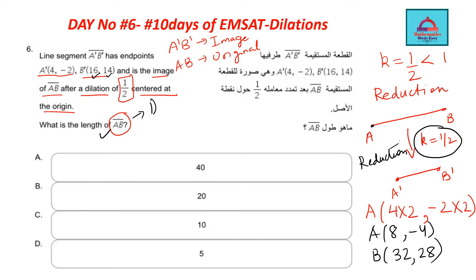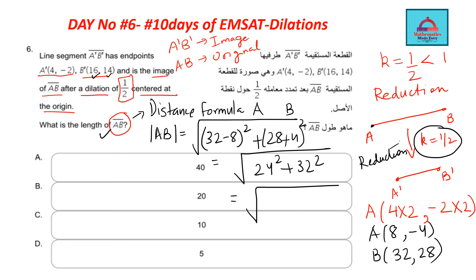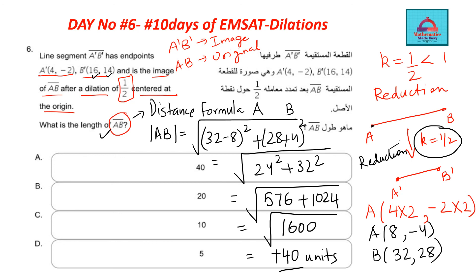Now we need to find the length, so we use the distance formula. To find distance AB, we subtract x-coordinates and y-coordinates: (32 - 8)² + (28 - (-4))² = 24² + 32². That gives us 576 + 1024 = 1600. The square root of 1600 is ±40, but because we are considering length or distance, it will be only 40.